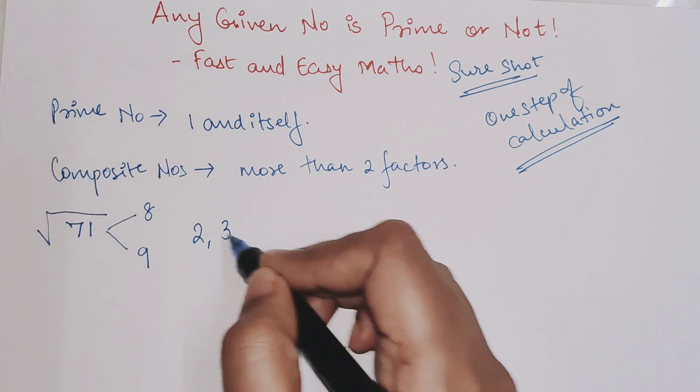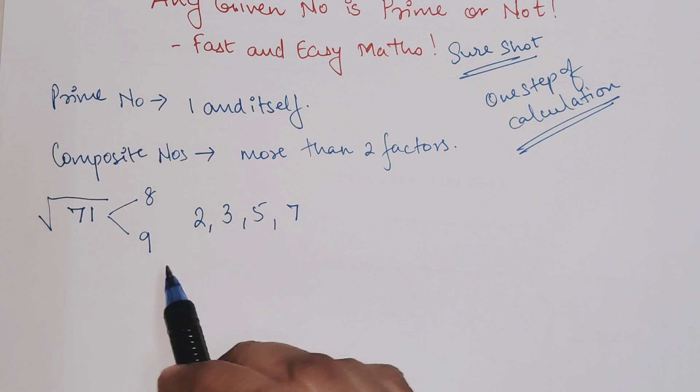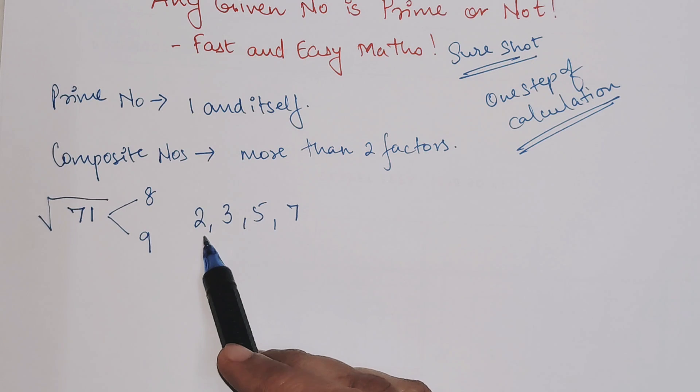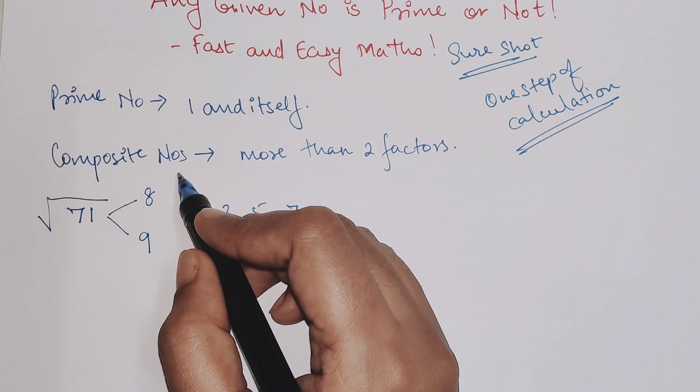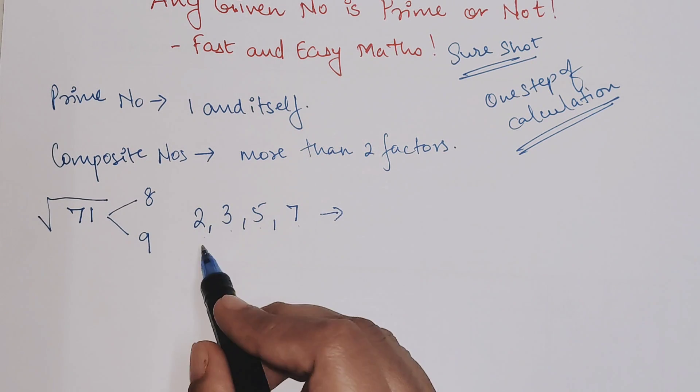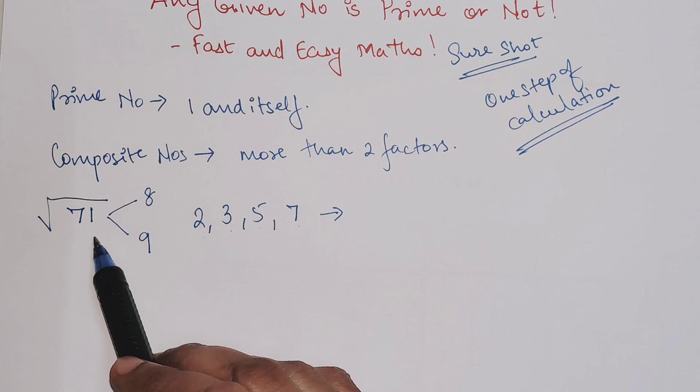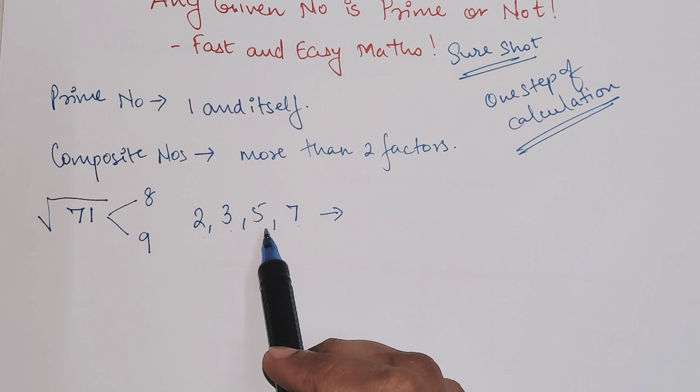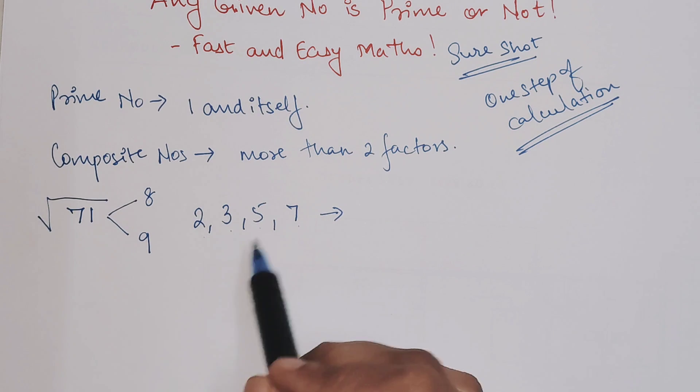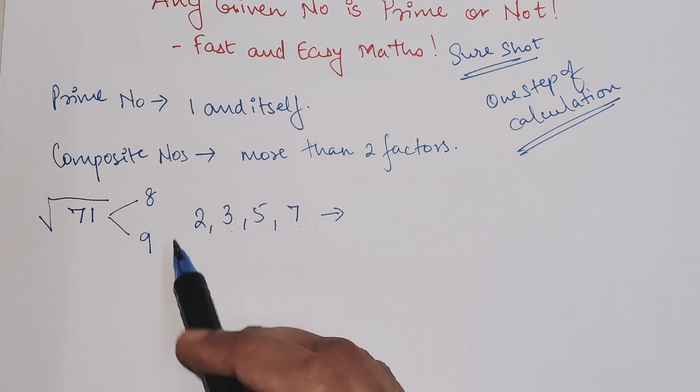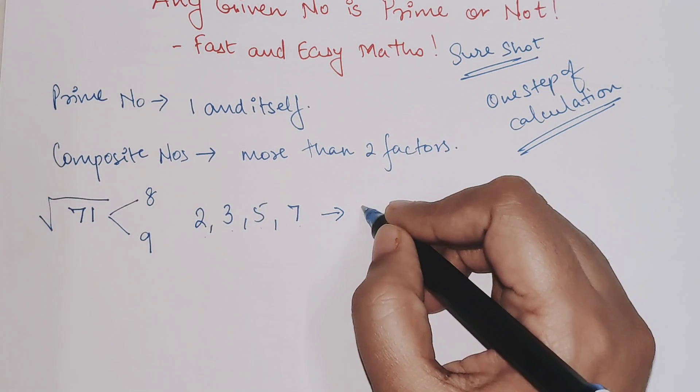Your next step is very simple: check whether 71 is divisible by 2, 3, 5, or 7. If yes, then it's composite. If no, then it's prime. Since it's not even, it's not divisible by 2. The digit sum is 8, so not divisible by 3. Last digit is not 5 or 0, so not divisible by 5. Seven times ten is 70, so 71 is not divisible by 7. According to our analysis, this is a prime number.